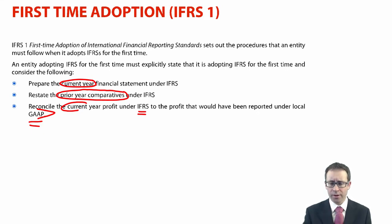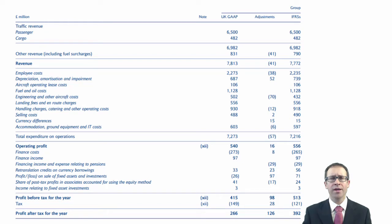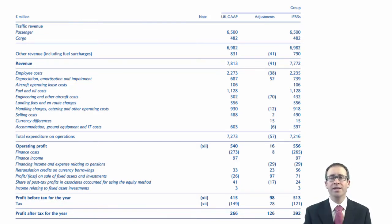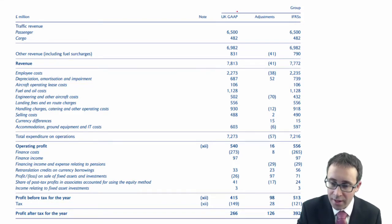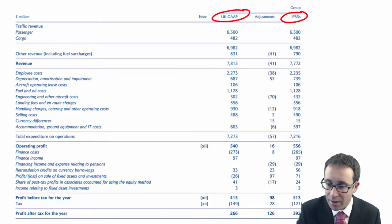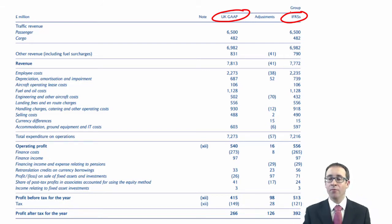I'm going to show you a disclosure note — I think it's from British Airways' financial statements for the year ended 2006, which is when they moved from UK reporting rules over to international reporting rules. What you can see here is the disclosure note that reconciles the profit under UK rules to that under international rules. You have UK GAAP on the left and IFRS on the right.